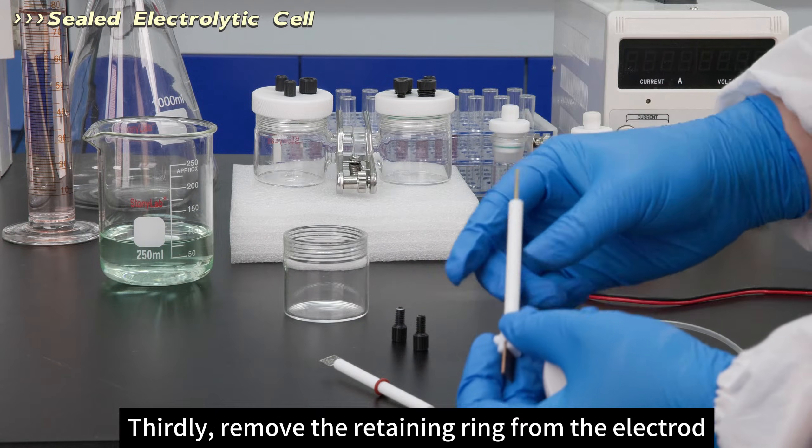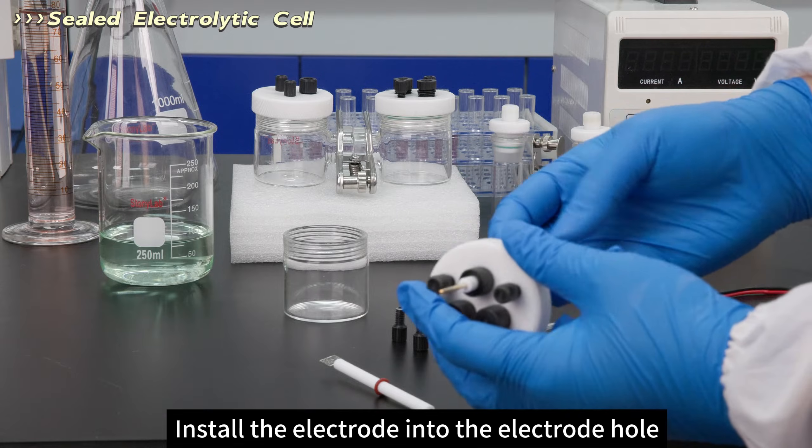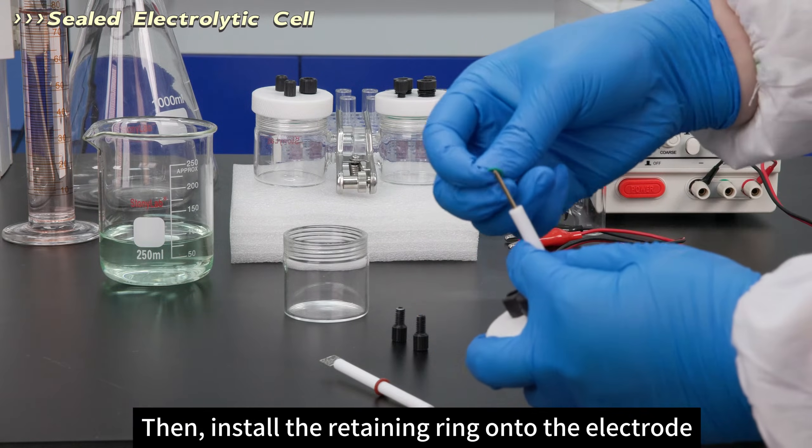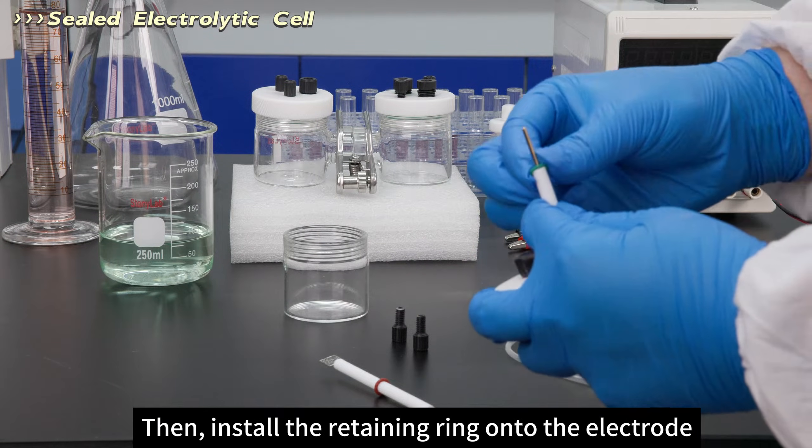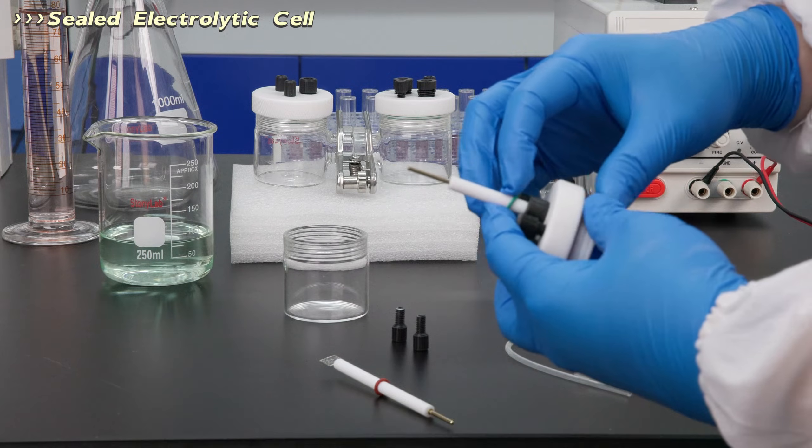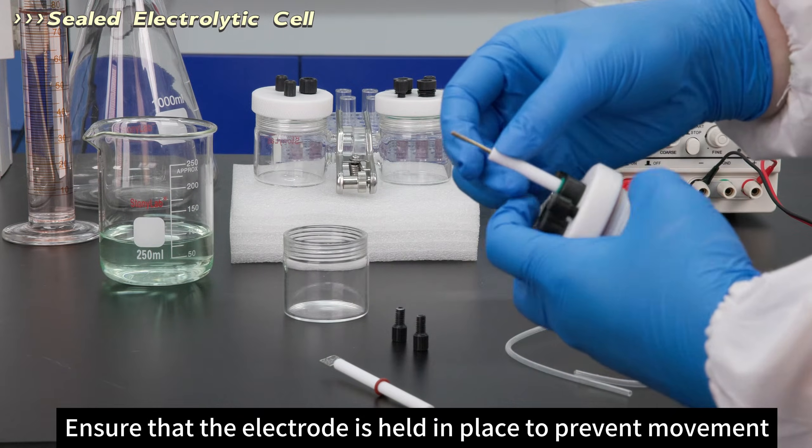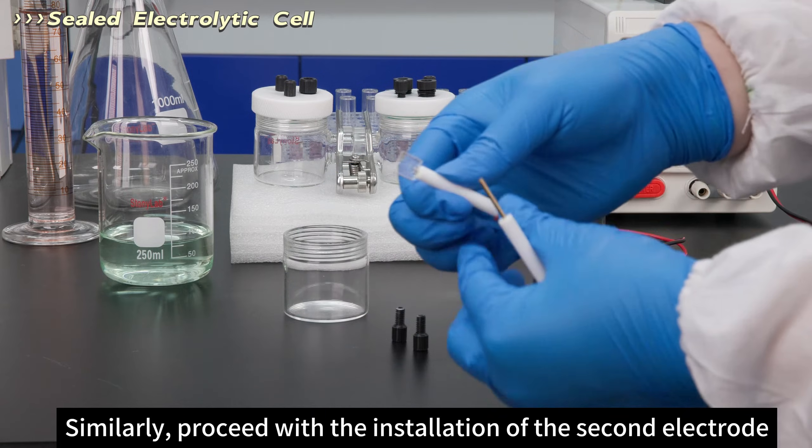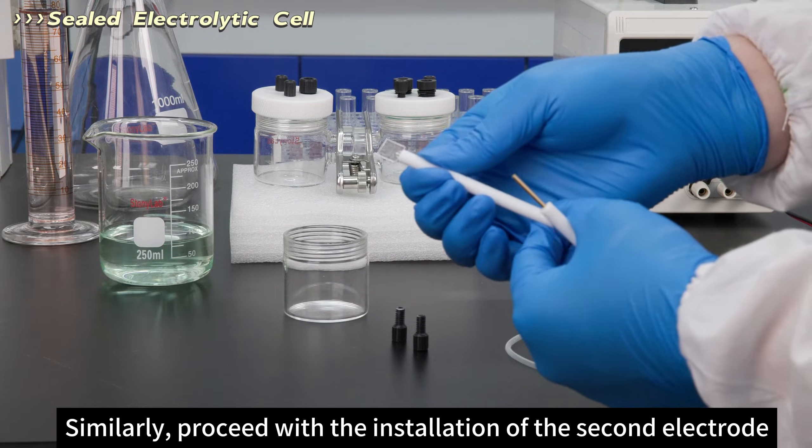Remove the retaining ring from the electrode. Install the electrode into the electrode hole, then install the retaining ring onto the electrode. Ensure that the electrode is held in place to prevent movement. Similarly, proceed with the installation of the second electrode.